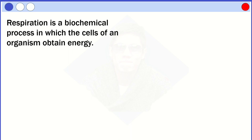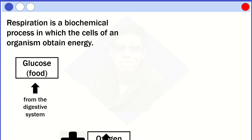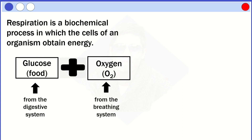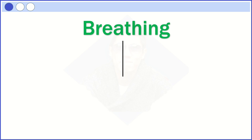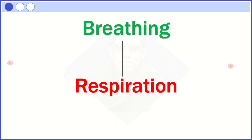Respiration is a biochemical process in which the cells of an organism obtain energy. Respiration occurs in order for the cells to obtain energy — they use oxygen to burn food. Water and carbon dioxide are produced as waste. Just remember that the word breathing is linked to respiration. Oxygen that we take in is needed by the cells to undergo the process of respiration to produce energy.